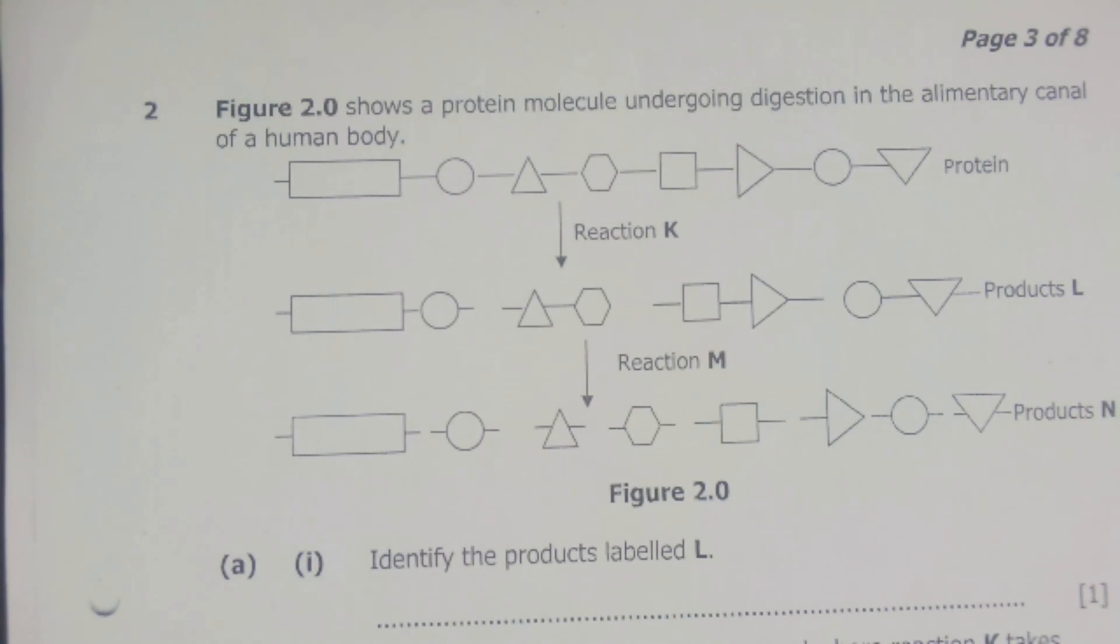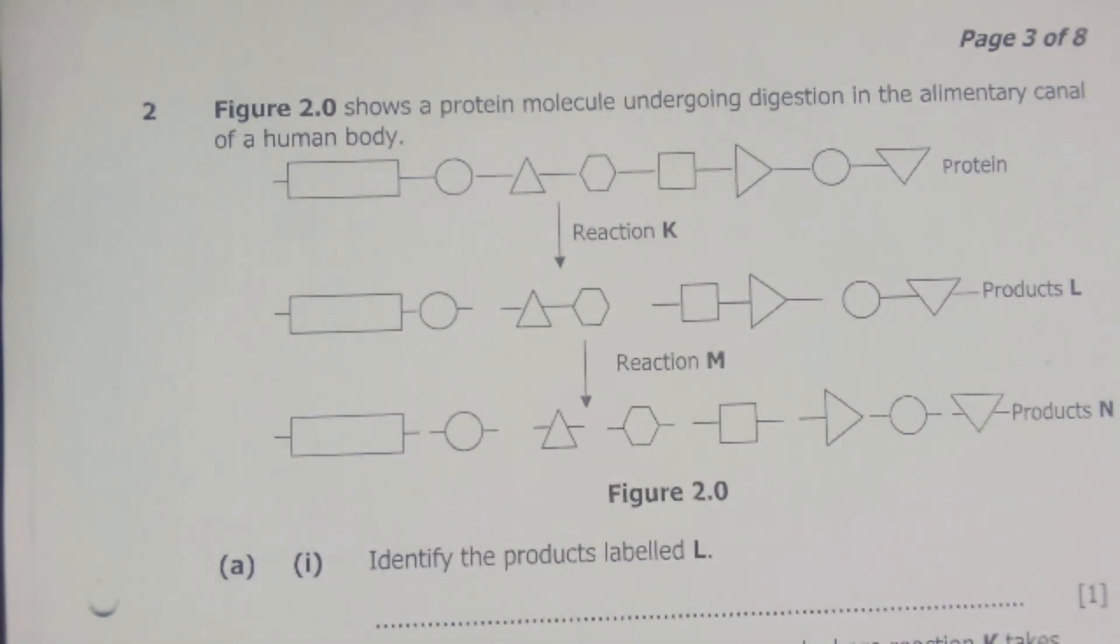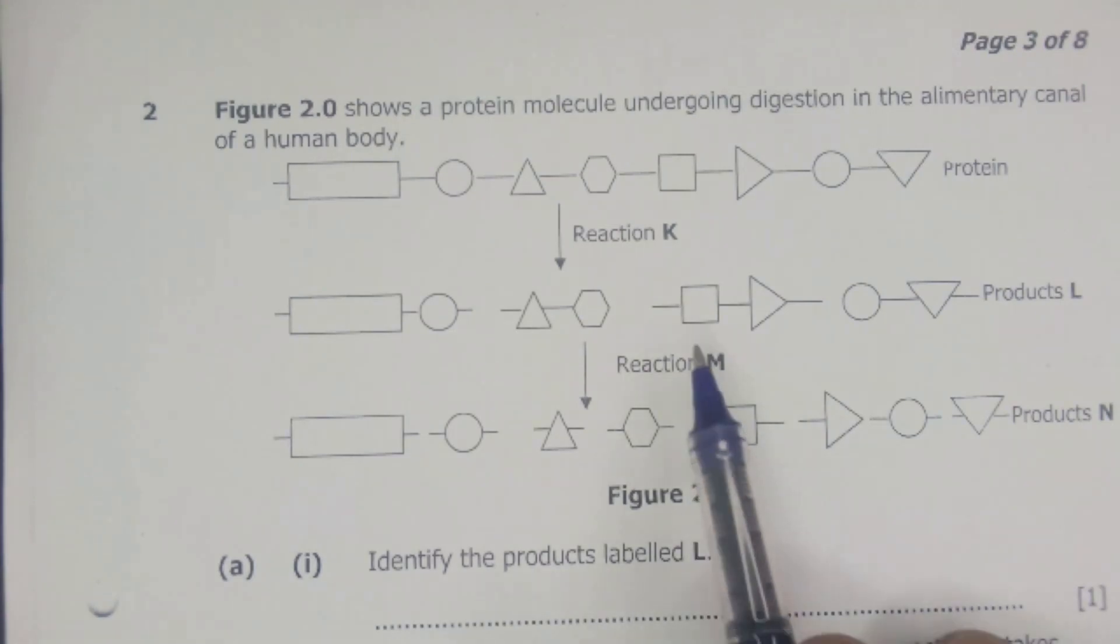The question has figure 2.0 which shows a protein molecule undergoing digestion in the alimentary canal of a human body. We have a protein here which is undergoing digestion by reaction K and then it's broken down into these two joint pieces which are called product L. It will further undergo reaction M which breaks down into individual blocks of pieces and these are products N.